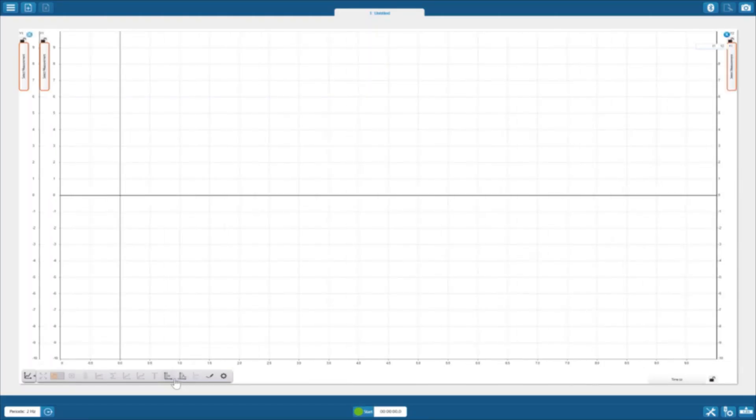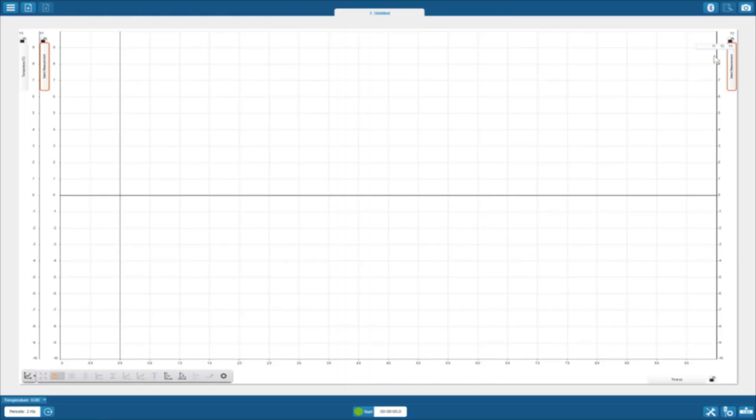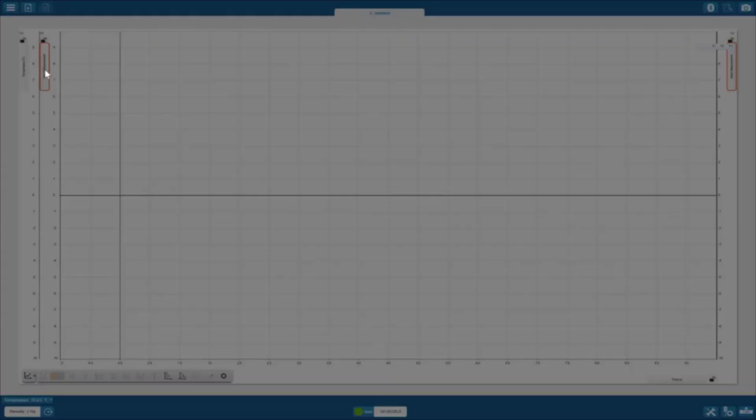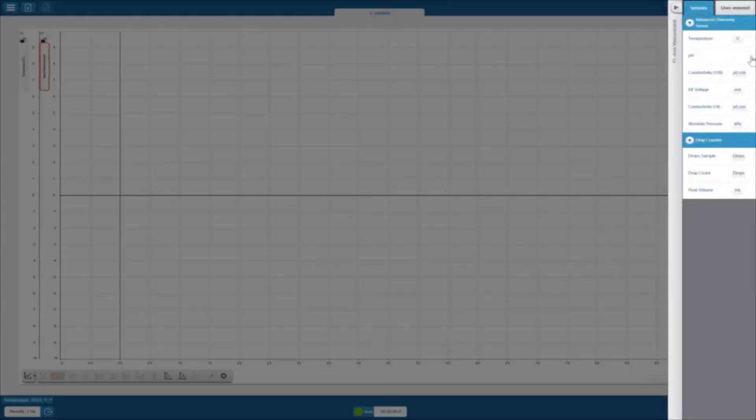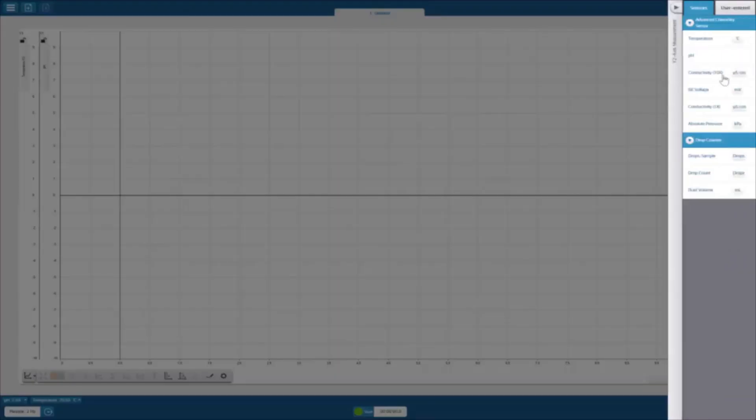Using the graph toolbar, click the add y-axis button twice so that we have three vertical axes to work with. Assign each of these axes a measurement. We'll first assign one with temperature in degrees Celsius. Then we'll include pH. For your last y-axis, select the conductivity 10x sensor.